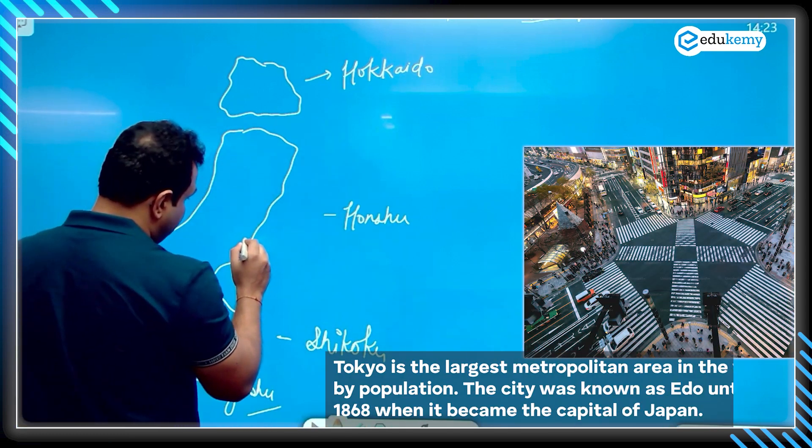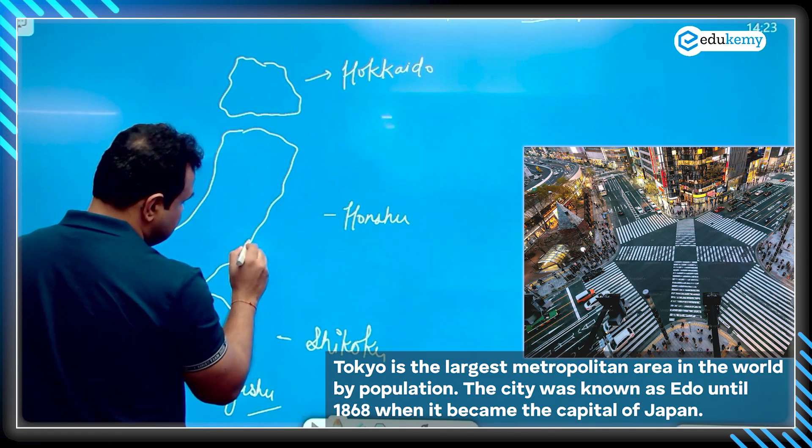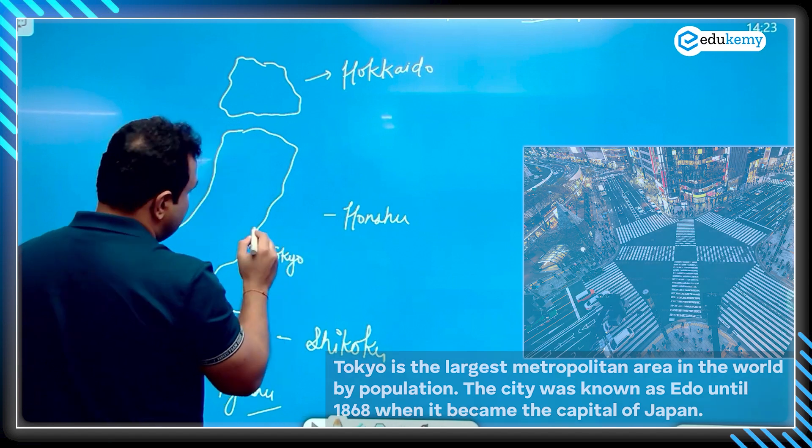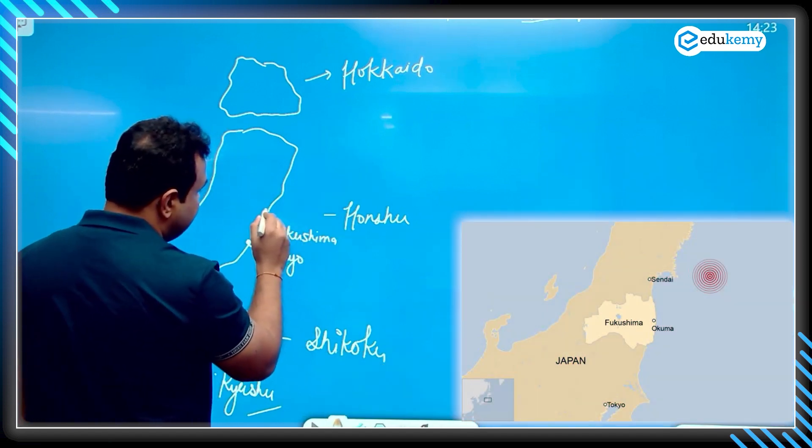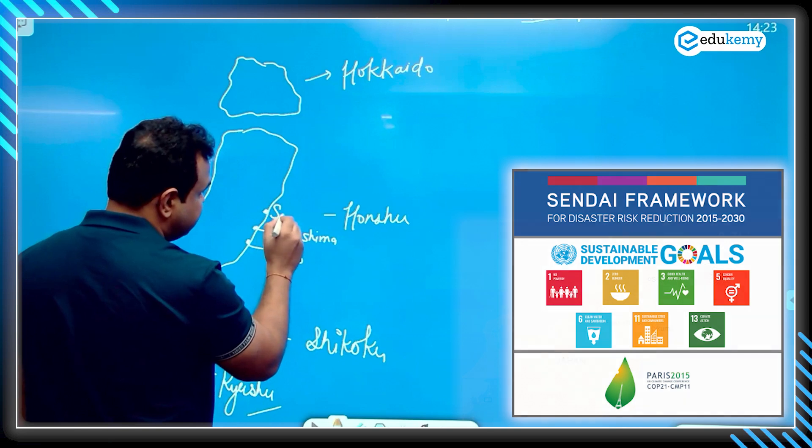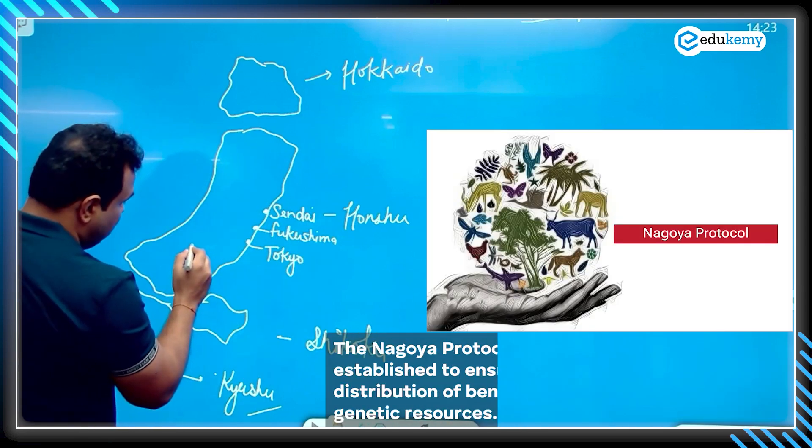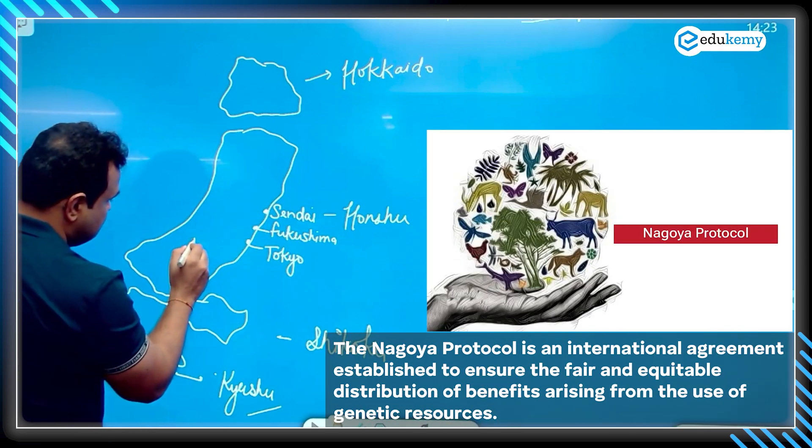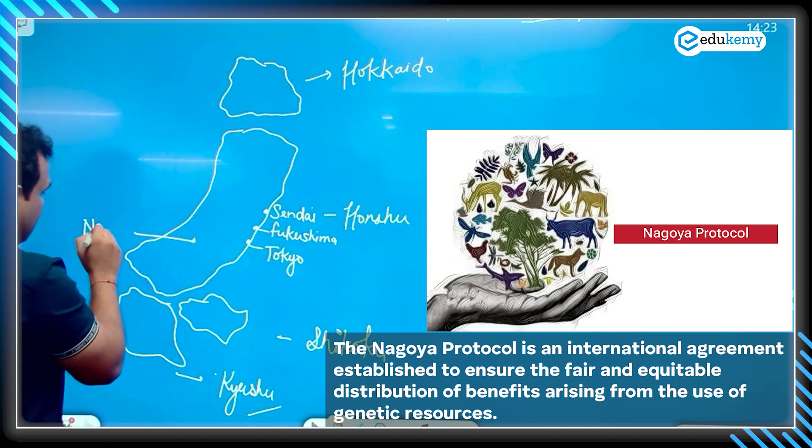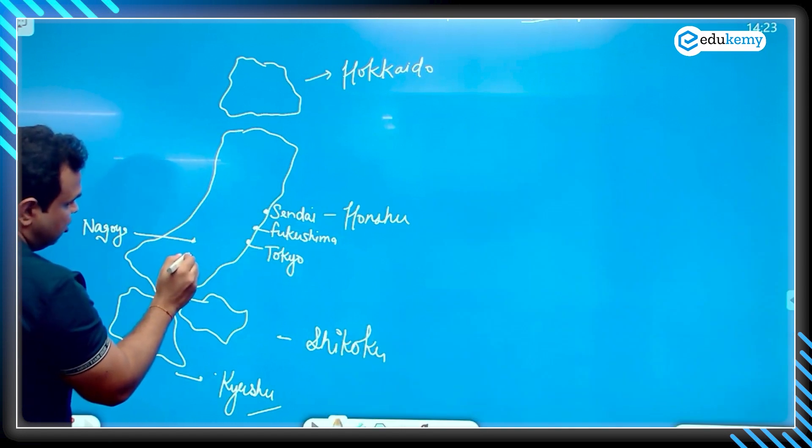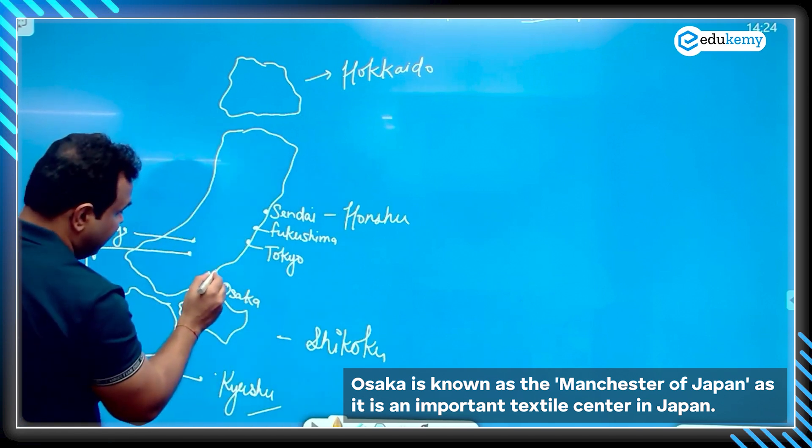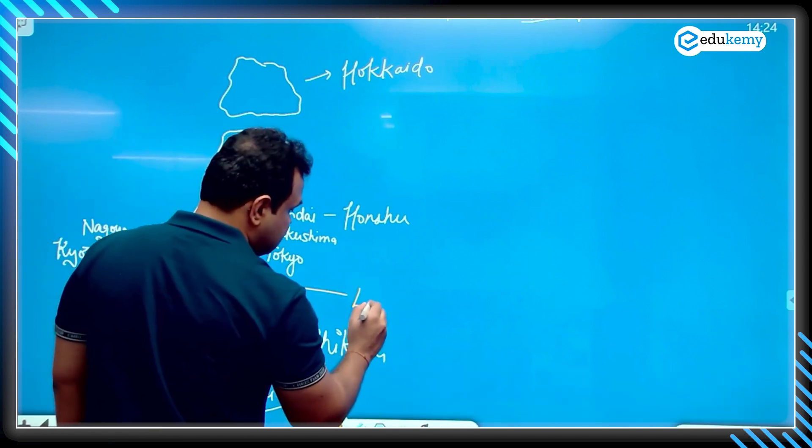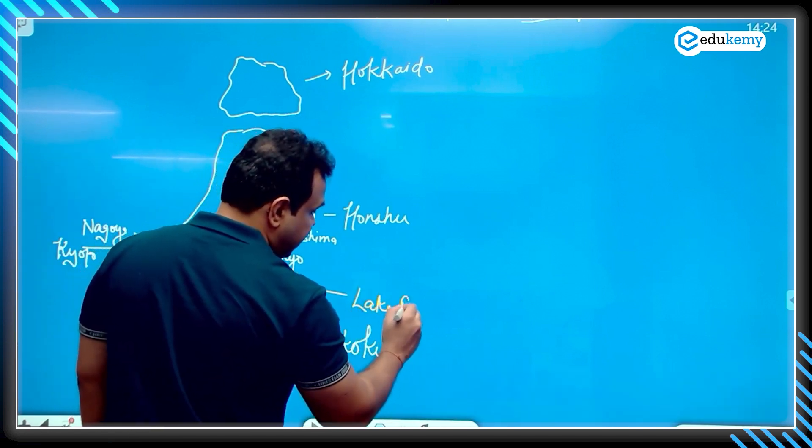We have Tokyo here. Just above Tokyo, we have Fukushima, Sendai. Sendai framework for disaster reduction, you might have studied about it. Here we have Nagoya, this one is Kyoto, here we have Osaka. We have Lake Biwa, this is Lake Biwa.